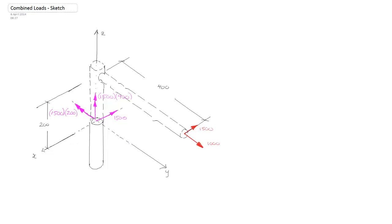The next step is to translate the 1000 newton force from the end of the arm to the top of the post. We can do this without introducing any moment or torque impact, because we're translating the force along its line of action and thus not changing any perpendicular distances to the other axes. However, when we translate the force from the top of the post down to the cross-section, we notice we are changing the perpendicular distance — in this case about the x-axis. So we need to introduce a negative moment about the x-axis, using the right-hand rule, to counter the loss of this effect as we translate the force.